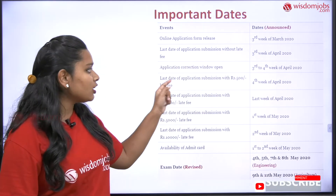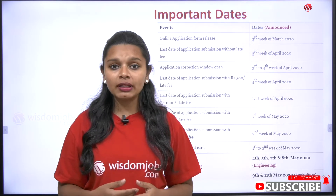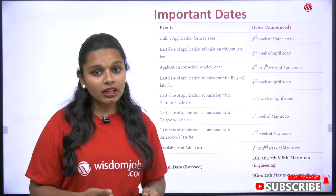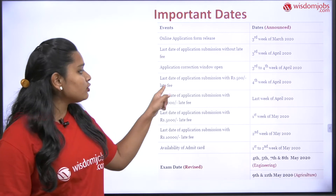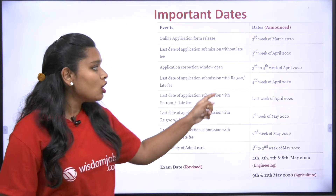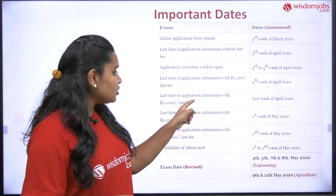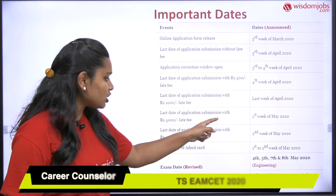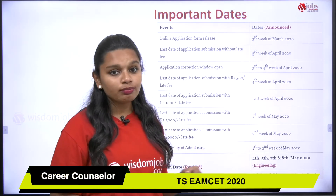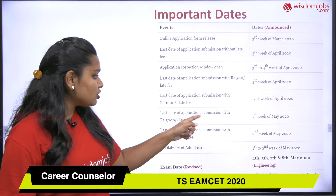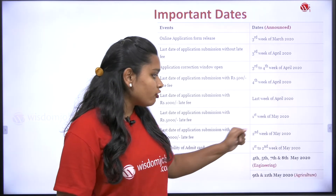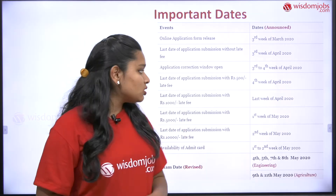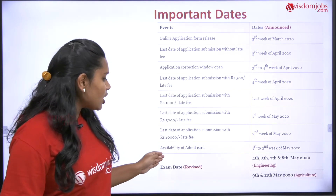The application correction window, where you can fix any mistakes in your application form, is from the third to fourth week of April 2020. The last date of application submission with ₹500 late fees is the fourth week of April 2020. With ₹1,000 late fees it is the last week of April 2020. With ₹5,000 late fees it is the first week of May 2020, and with ₹10,000 late fees it is the second week of May 2020.